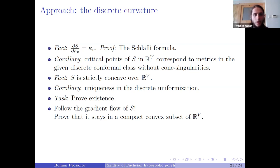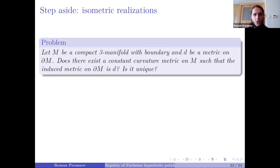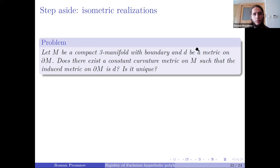Now I would like to say what problems we are working on currently. I was not really interested in discrete conformality problems — it came out as an interesting byproduct — but we are mostly interested in isometric realization problems. In very general form: we have a compact three-dimensional manifold with boundary and some metric on this boundary, and we want to know if there exists a constant curvature metric on our manifold inducing the given boundary metric, and if such a realization is unique.